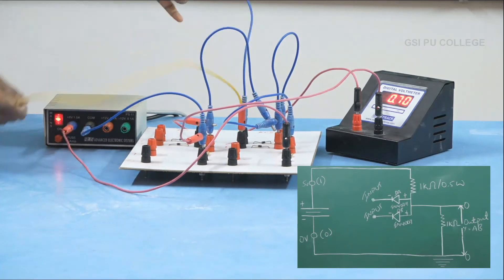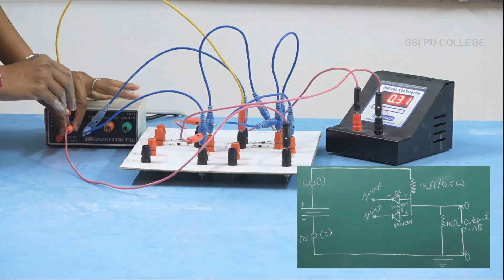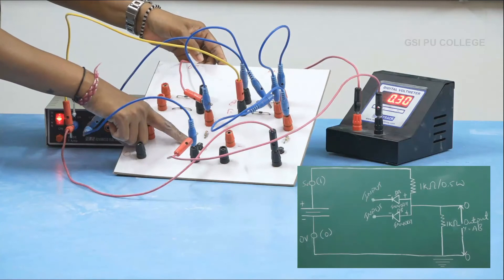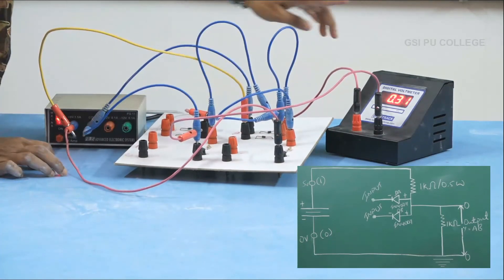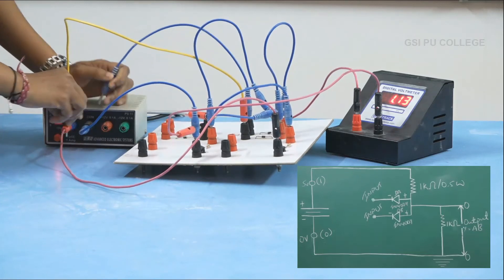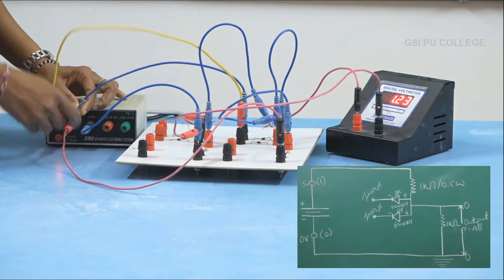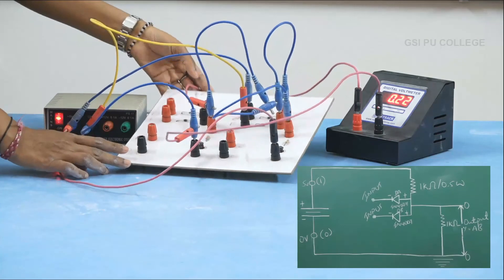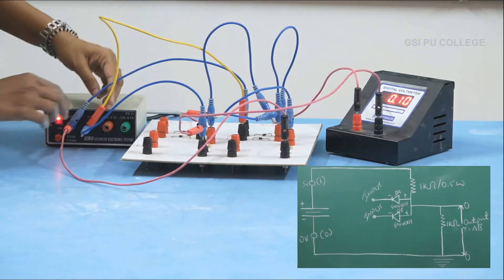For the second combination, A is equal to zero — I connect A to the common terminal — and B is equal to one, connecting B to plus 5 volts. Even now the LED is not glowing. According to the logical output for input combination 0 and 1, the output will be equal to zero. The LED response is in the off state and the voltmeter reads 0.29 or 0.30, which can be considered as zero. For the third combination, when A is equal to one, I connect A to plus 5 volts and B to zero volts. Even now the LED is not glowing — the LED response is off — and the voltmeter is showing a value of 0.13, which is almost equal to zero.